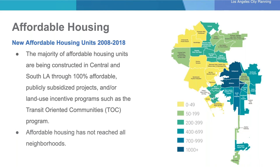You may be wondering where these units are. As you can see in the map, the majority of affordable units built over the last decade have been built in denser communities such as Hollywood, Wilshire, and downtown — largely consistent with where we are seeing development. That said, affordable housing has yet to reach all neighborhoods, due to factors including lack of developable land, lack of funding, lack of community support, and lack of land zoned for multi-family housing.